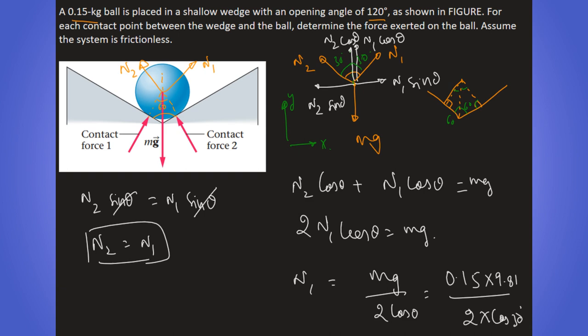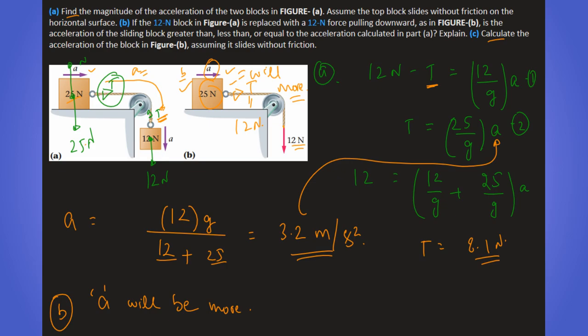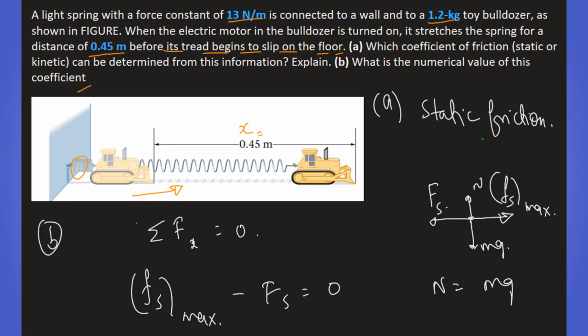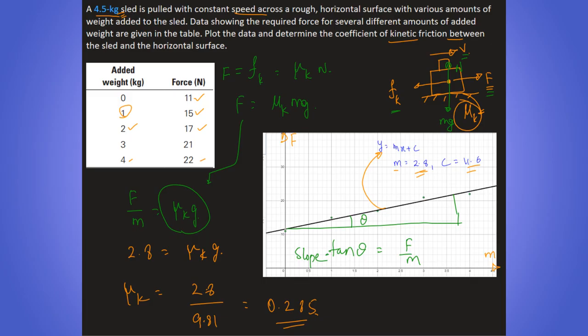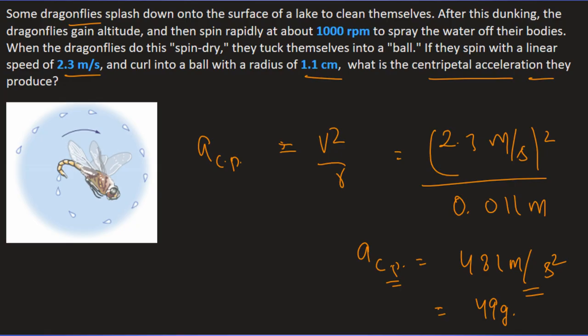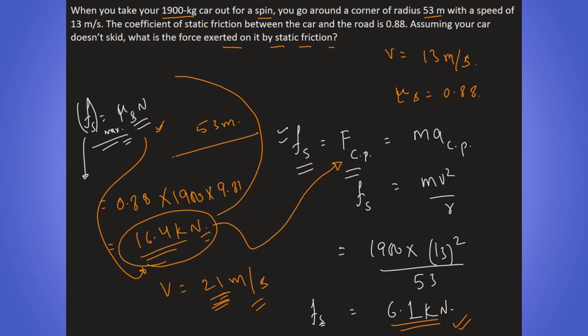Welcome back to my YouTube channel. We have completed the chapter on Applications of Newton's Laws, discussing questions on friction, springs, translational equilibrium, circular motion, and connected objects. In the last video we did some general problems from this chapter, and in this video we will also do some general problems. This is the last video for this chapter, and after this video we will start a new chapter next year. This is the last day of 2022, so let's start.